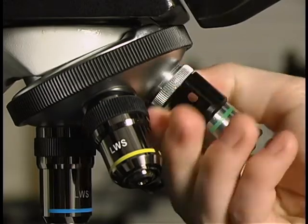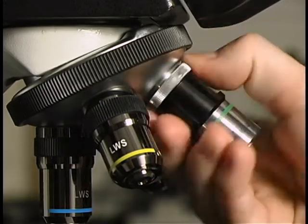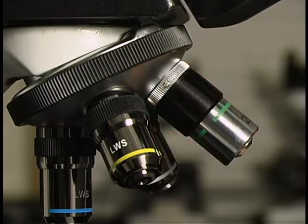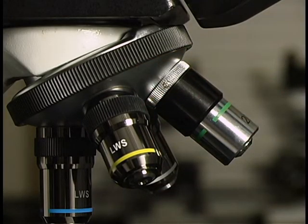To attach the Paralens Advance body to a standard light microscope, thread the body directly into the nose piece until the attachment is tight and secure. Be careful not to force the Paralens Advance into the threading when attaching, as this could potentially damage the Paralens Advance as well as the microscope itself.